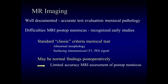MR imaging has been well documented as an accurate test in the evaluation of virgin meniscal pathology, and difficulties with MR imaging have been clearly recognized in evaluation of the postoperative meniscus dating back to early studies in the late 1980s and early 1990s. These early studies showed that the standard or classic MR diagnostic criteria of a meniscal tear — namely abnormal morphology of the meniscus or the presence of surfacing intra-meniscal short TE, so T1 or proton density signal intensity within the meniscus — may be normal findings postoperatively, and thus limited the accuracy of MR imaging assessment of the postoperative meniscus using these diagnostic criteria.